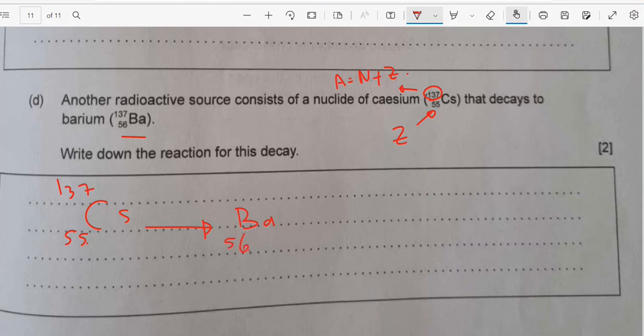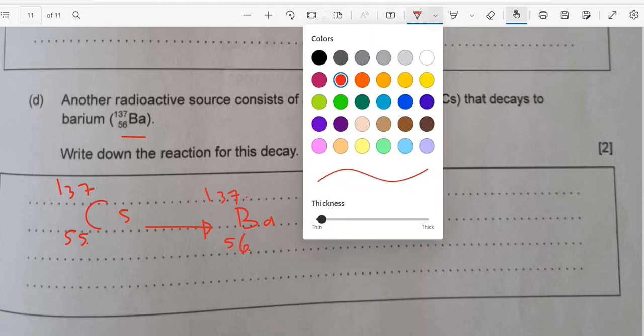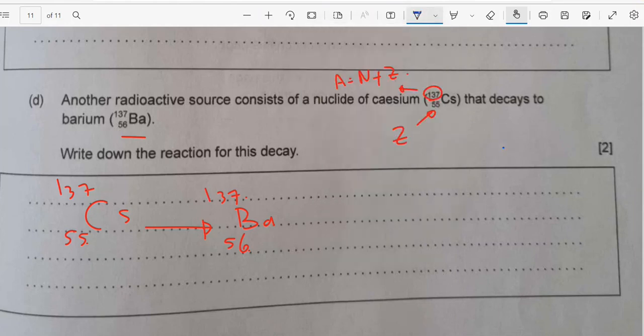It will decay to barium-56 to 137. So if you notice, the atomic number doesn't change. I have 137, 137. But the number of protons now changed, became 56 from 55 to 56.